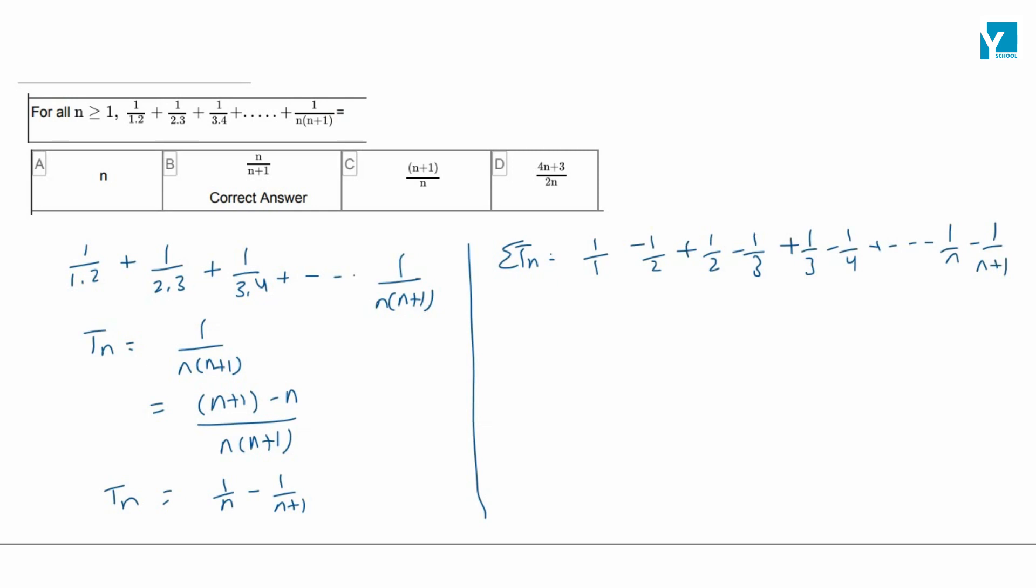So, in this the terms will cancel. 1 by 2 with 1 by 2 will cancel, this with this, up to 1 by n will cancel. You'll get 1 minus 1 upon n plus 1, that will become n upon n plus 1. Option B is the right answer.